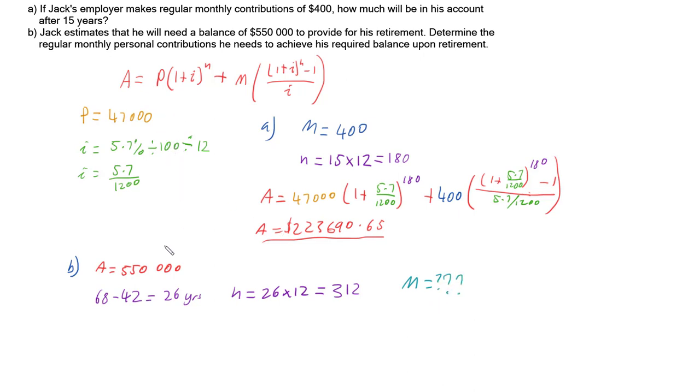So let's go back to our formula, put in what we know. We know that our final amount A is $550,000, and we know that that's going to equal our principal multiplied by (1 plus i), 5.7 over 1200, to the power of n, 312, plus our unknown M, multiplied by (1 plus 5.7 over 1200) to the power of n, 312, minus 1, all over i, 5.7 over 1200.